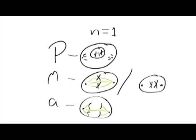In prophase, the chromosomes in the nucleus condense to form recognisable shapes of chromosomes, and the spindle fibres start to form from the centrosome.